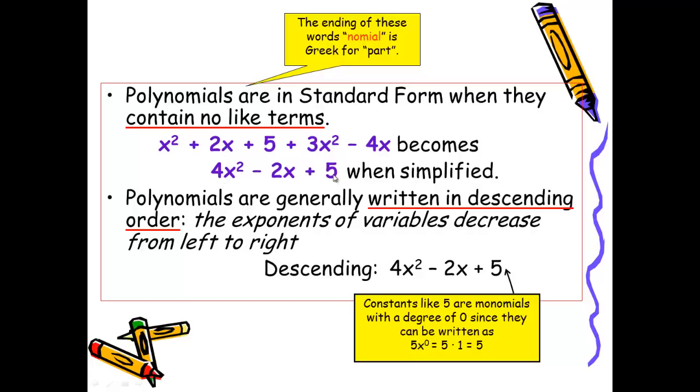Polynomials are also generally written in descending order. This means that the exponents of the variables decrease from left to right. So in this example, we have the x² term first, followed by the x term, followed by the constant. Because a constant always has a degree zero.